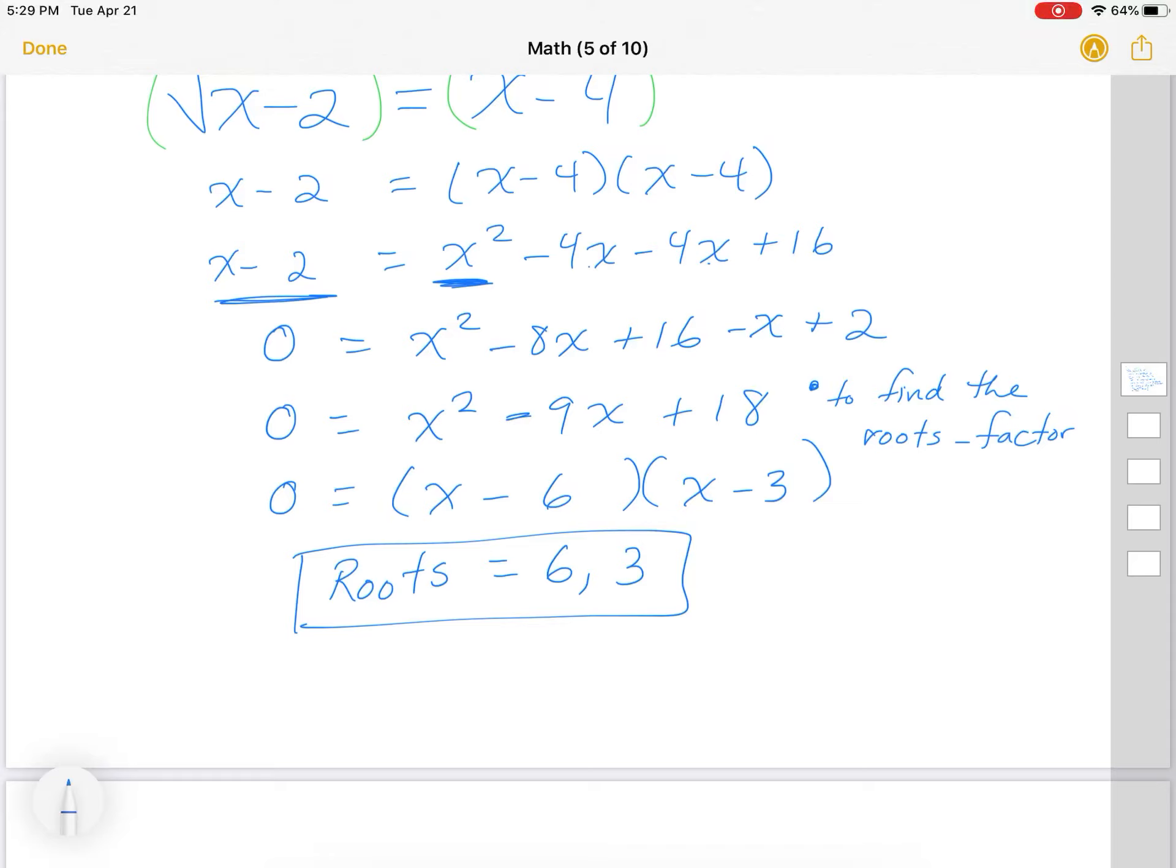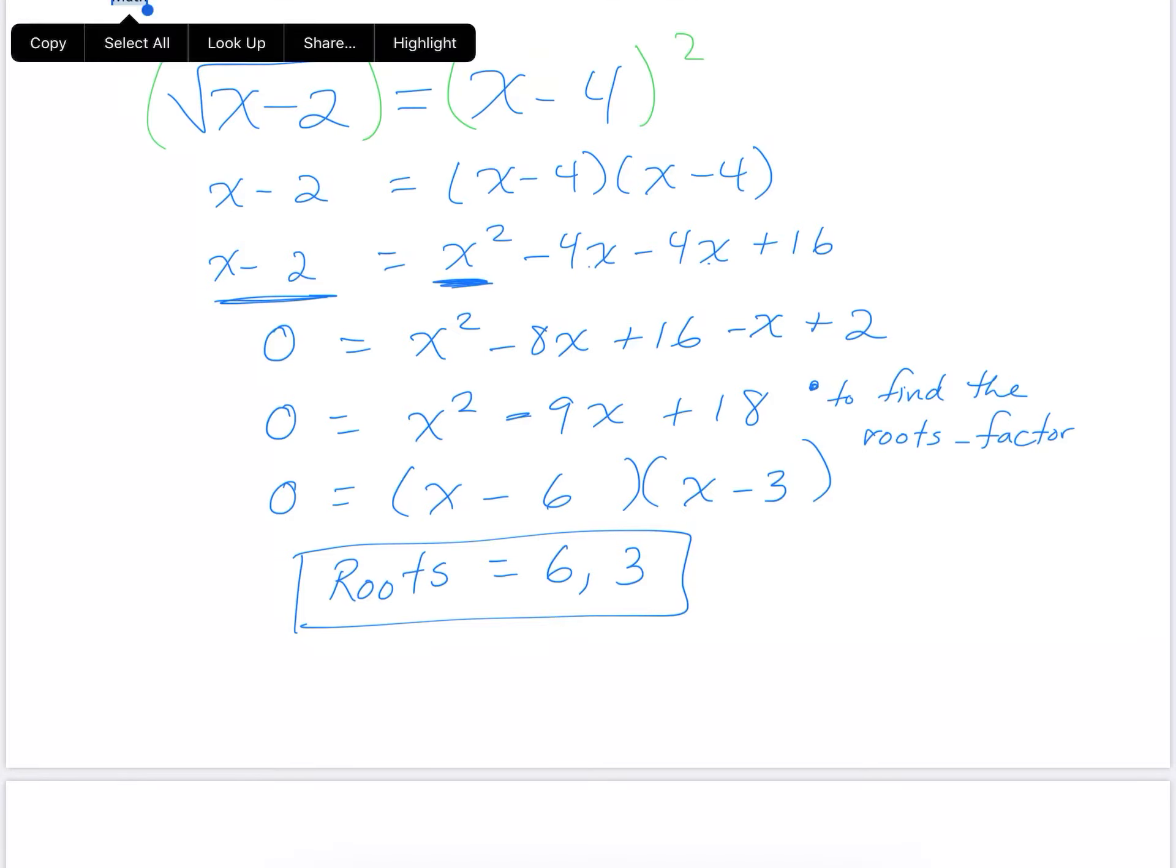Are 6 and 3. So those are my possible values. Now I need to check both of them to see if either one of them is an extraneous root.